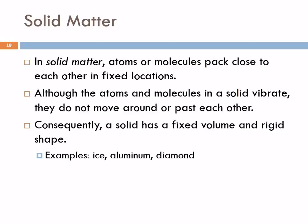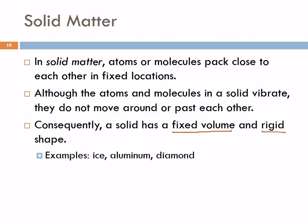Let's go over these states briefly. In solid matter, the particles are packed close to each other in fixed locations, but they vibrate — they don't move relative to each other. So a solid has a fixed volume and a rigid shape. Examples are ice, aluminum, and diamonds.